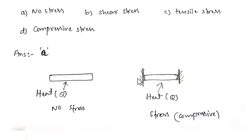When any bar or object is heated and it is free to expand, there will be no stress developed in the bar or member. When the member is restricted — fully or partially — stresses will be developed in the bar, and generally if restricted, compressive stresses will develop.